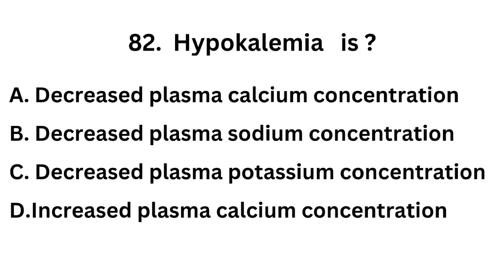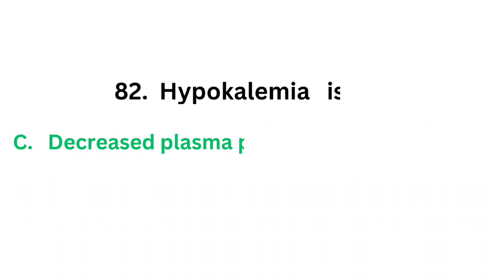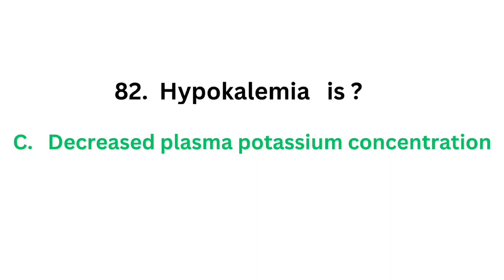Question number 82. Hypokalemia is: Option A: Decreased plasma calcium concentration. Option B: Decreased plasma sodium concentration. Option C: Decreased plasma potassium concentration. Option D: Increased plasma calcium concentration. The correct answer is option C, decreased plasma potassium concentration. Hypokalemia is decreased plasma potassium concentration.